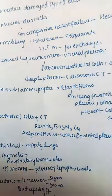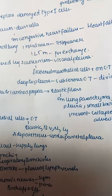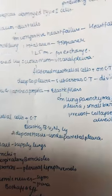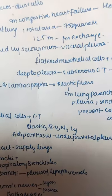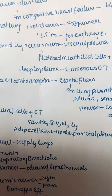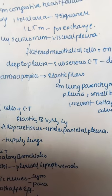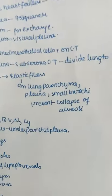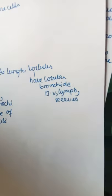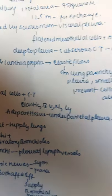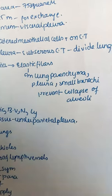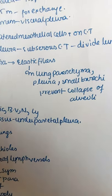The area where gas exchange occurs is very thin because both carbon dioxide and oxygen need to exchange between blood and air. The greater part of the lung is covered by the serous membrane, the visceral pleura, which consists of flat mesothelial cells on connective tissue. Deep to the pleura is the sub-serous connective tissue, which divides the lung into lobules containing lobular bronchioles, blood vessels, lymphatics, and nerves. Elastic fibers in the basal lamina and lamina propria of the lung parenchyma, pleura, and small bronchi prevent collapse of the alveoli.